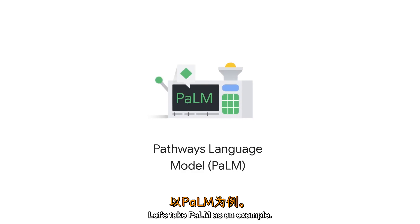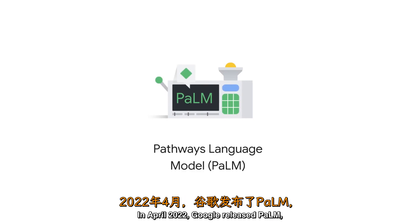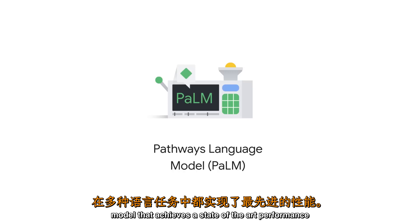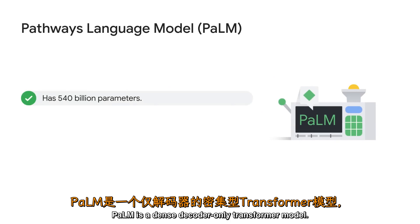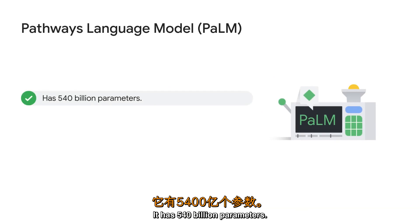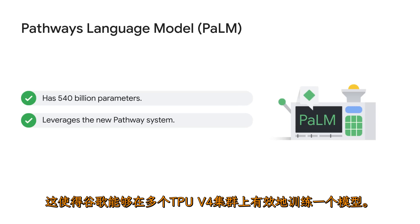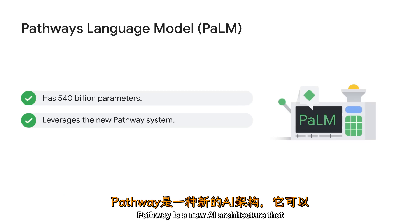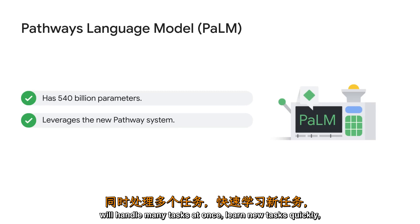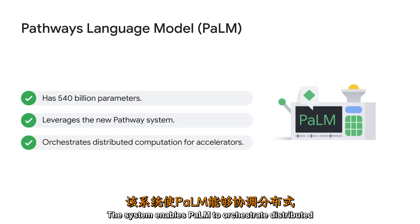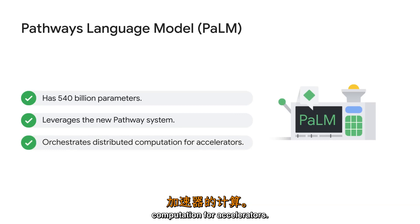Let's take PaLM as an example. In April 2022, Google released PaLM, short for Pathways Language Model, a 540 billion parameter model that achieves state-of-the-art performance across multiple language tasks. PaLM is a dense, decoder-only transformer model. It leverages the new Pathways system, which has enabled Google to efficiently train a single model across multiple TPU v4 pods. Pathways is a new AI architecture that handles many tasks at once, learns new tasks quickly, and reflects a better understanding of the world. The system enables PaLM to orchestrate distributed computation for accelerators.